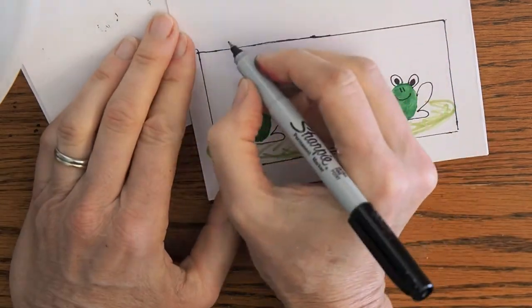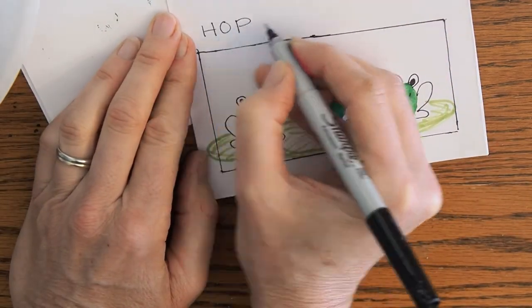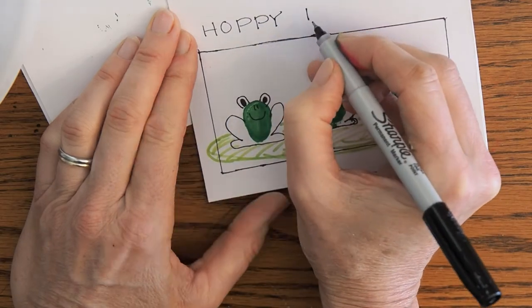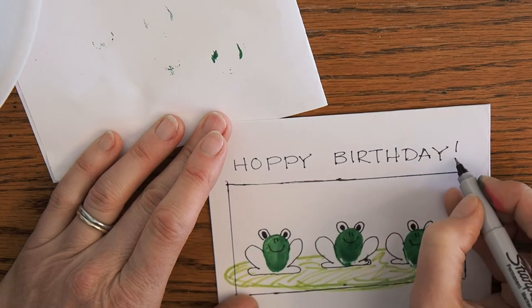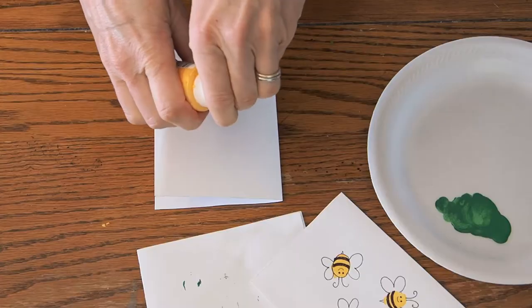Of course you could use crayons, colored pencils, whatever you have around. And then on this one we're going to write Hoppy Birthday. Of course you don't have to write anything or you can just put whatever message you like. I just thought Hoppy Birthday sounded cute.